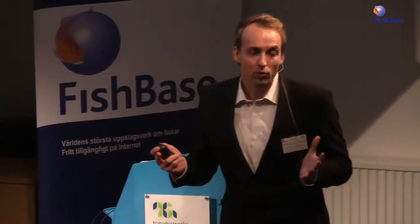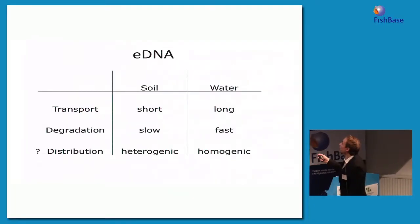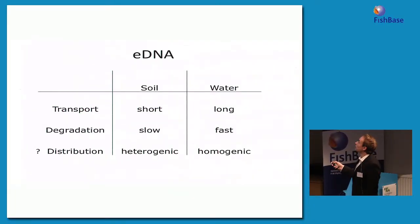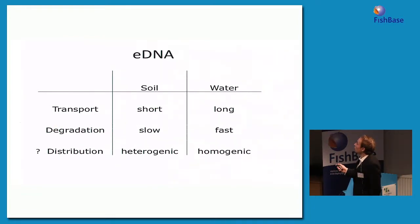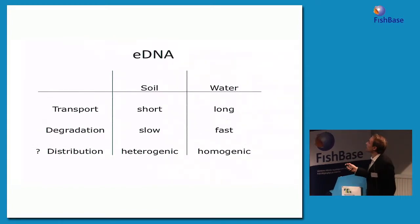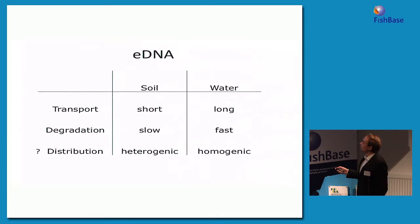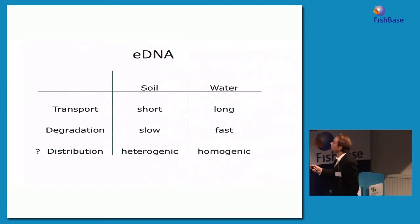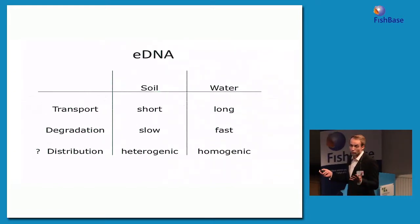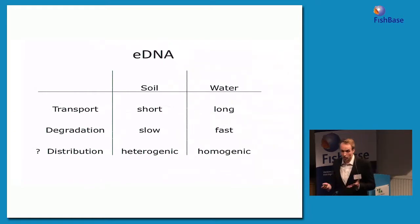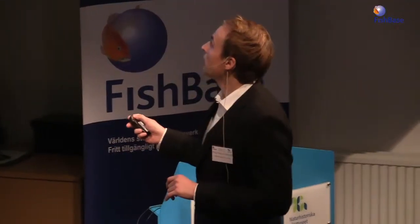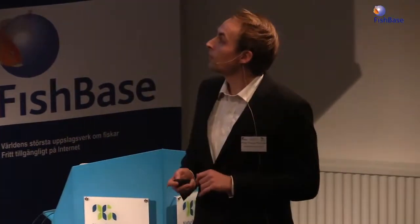Before talking about my own research, let's look at key differences between soil and water environmental DNA. Transport of DNA in soil is very short compared to water — water is a more dynamic environment. Degradation is very slow in soil, so DNA stays for a long time protected by soil particles, whereas degradation in water is very fast. The distribution of environmental DNA in soil is probably heterogeneous, whereas it's more homogeneous in an aquatic environment. On the other hand, it does degrade really fast in water.